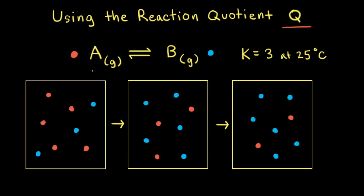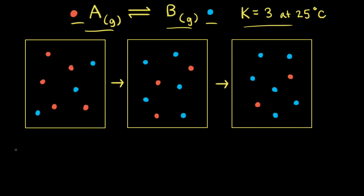For example, let's look at the hypothetical reaction where gas A turns into gas B. Gas A will be represented by red spheres and gas B will be represented by blue spheres. The equilibrium constant KC for this hypothetical reaction is equal to 3 at 25 degrees Celsius.